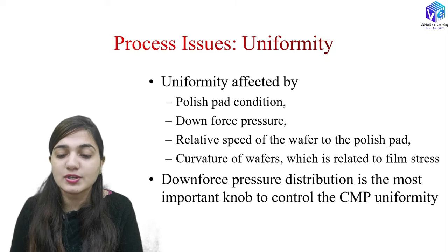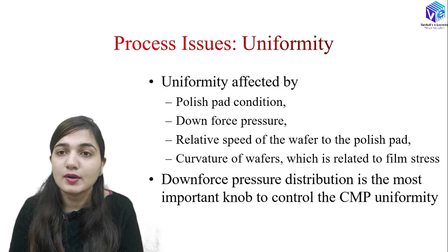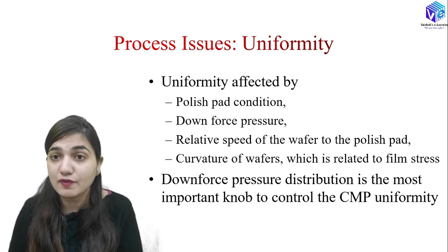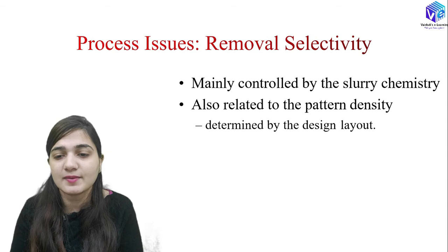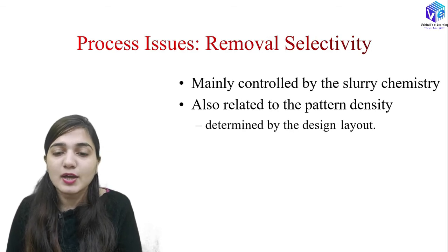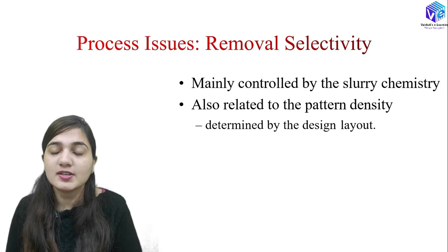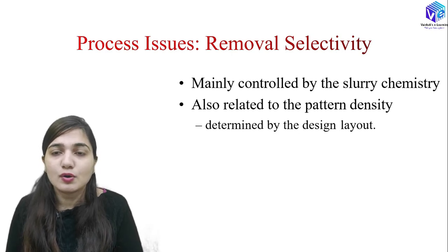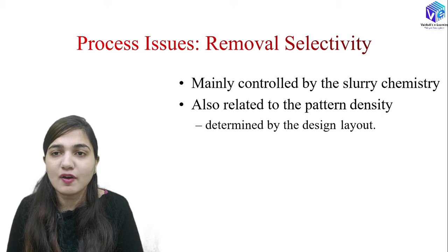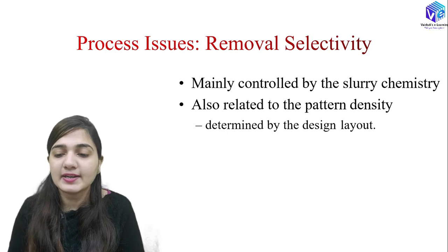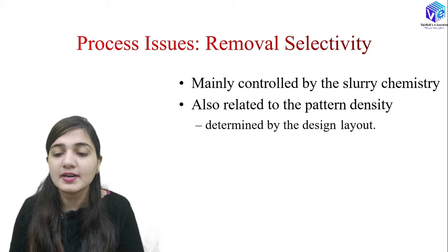Downforce pressure distribution is the most important factor to control CMP uniformity. Coming to removal selectivity, it is controlled with the help of slurry chemistry — if I change the chemistry of the slurry, the selectivity will also change. It is also related to pattern density; if I have a denser pattern, the removal rate will be lesser. So selectivity is also determined by the designed layout.